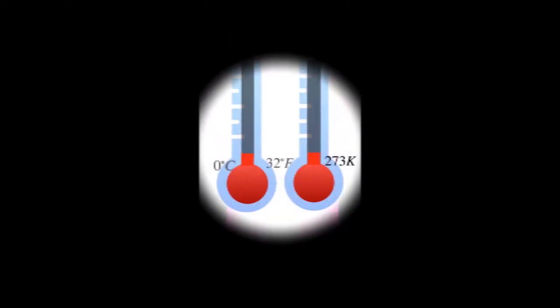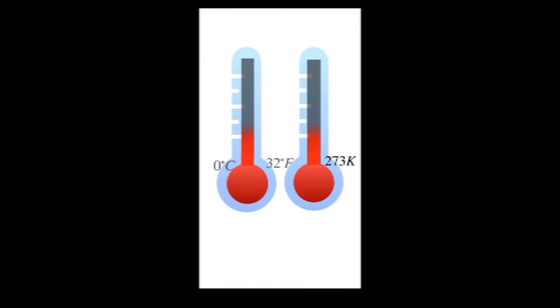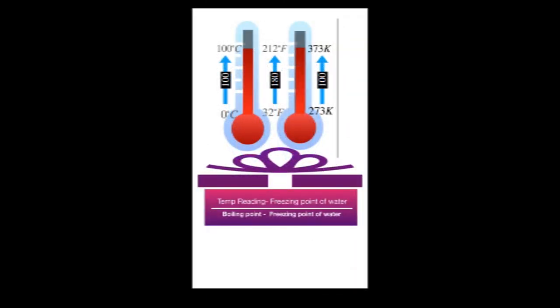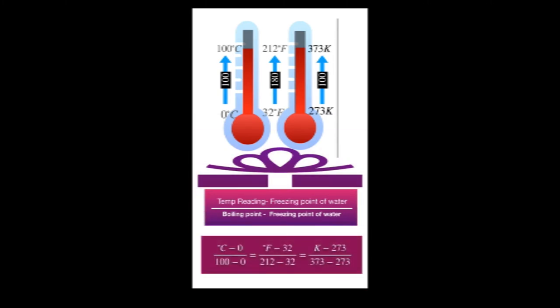What you need to know is freezing and boiling point of water in different temperature scales and that's all. Use this expression of temperature reading minus freezing point of water divided by boiling point minus freezing point of water for each temperature scale and equalize to get relation within different scales.